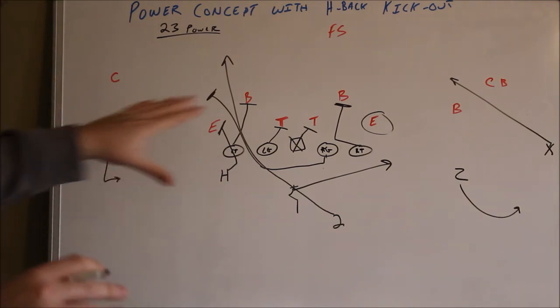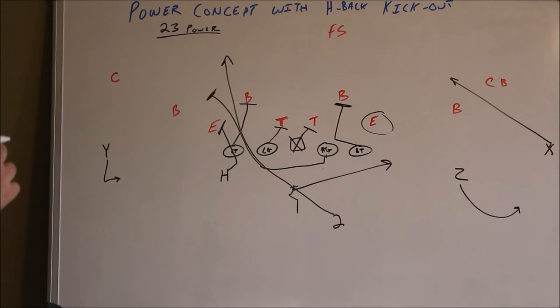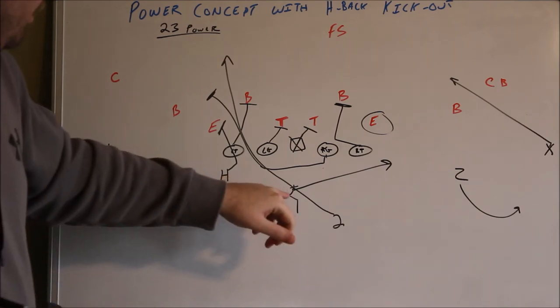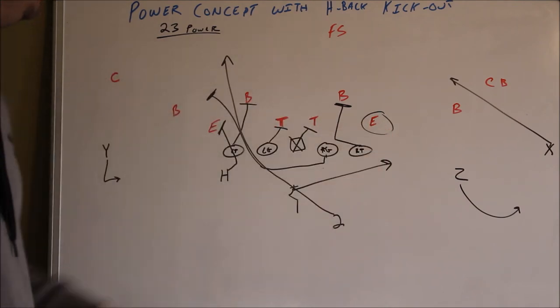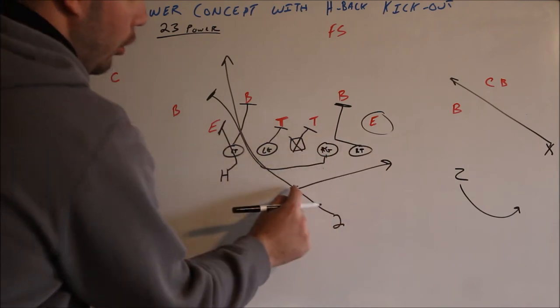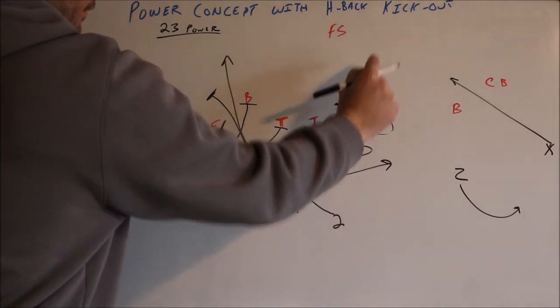So now, you could see there's several RPO options out of this play as well. And you could even implement a zone read where you have the quarterback read this kid. So, if this D end slants down, quarterback pulls it, keeps it upfield.